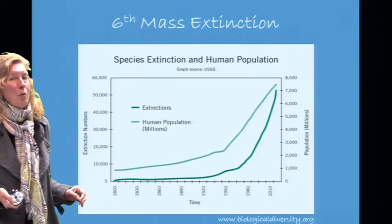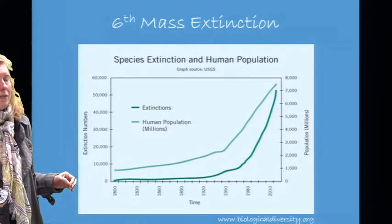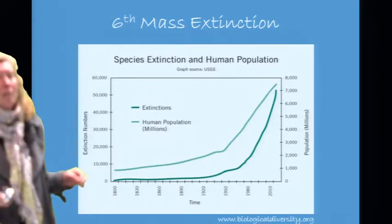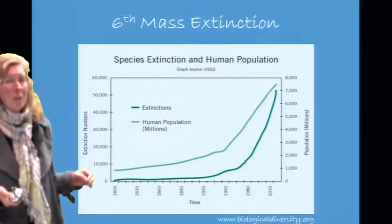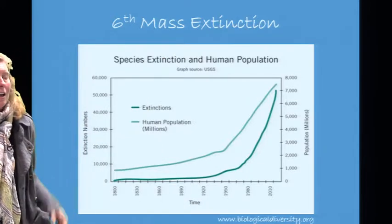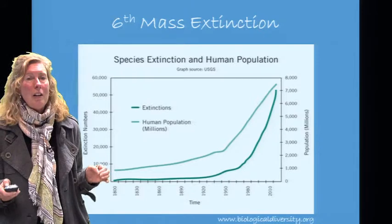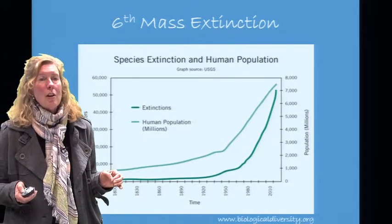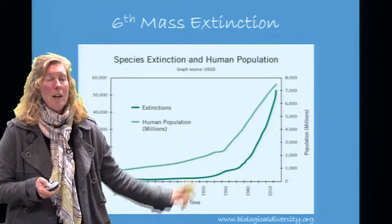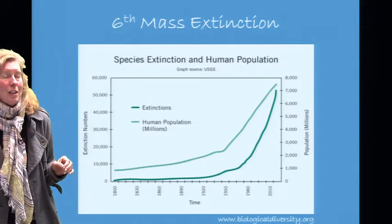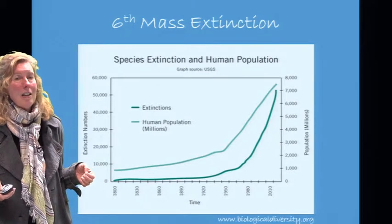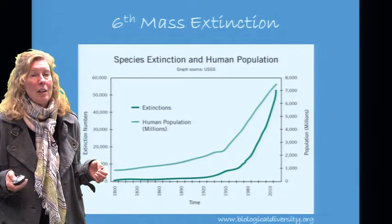Looking at species extinctions and human population together — with extinction numbers in the tens of thousands on the left axis and human population in millions on the right — we again see that familiar J curve, indicating that what we are measuring is happening very rapidly: exponential growth. We are seeing human population growth, and we are seeing extinction growth very closely mirroring it. This indicates that human population growth is influencing these extinctions.